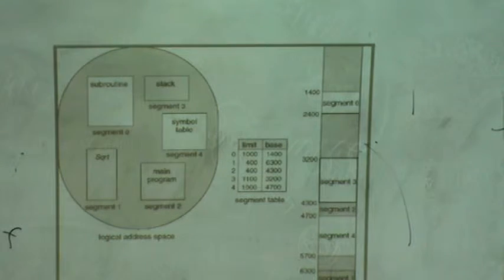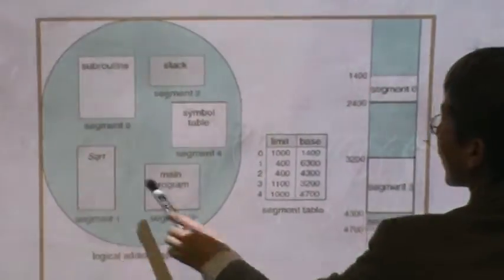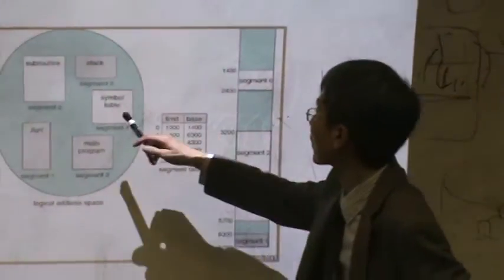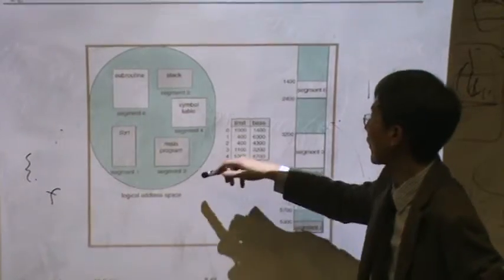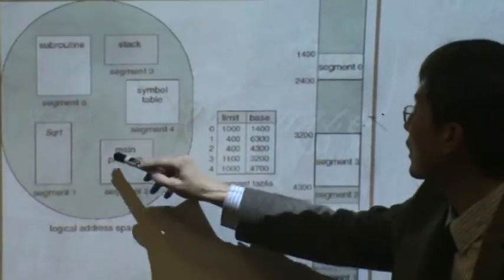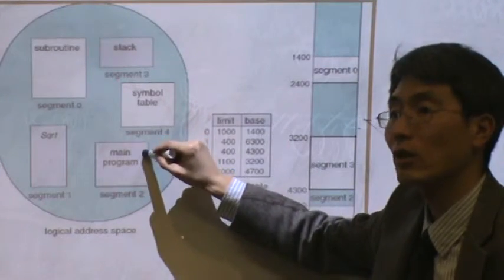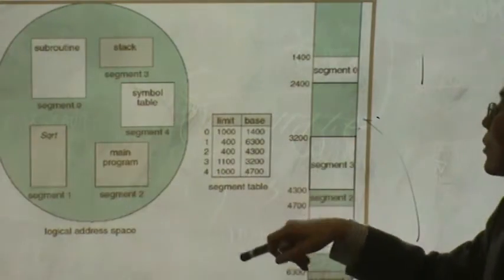So this is an example of such a segmentation. And this is a segmentation table, a model that has been used. So segment zero keeps all the subroutines code. And this is the library part, it's a function. This one is the main. And so on. So each segment consists of different modules, but it can be grouped logically.